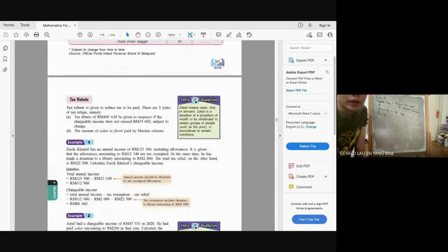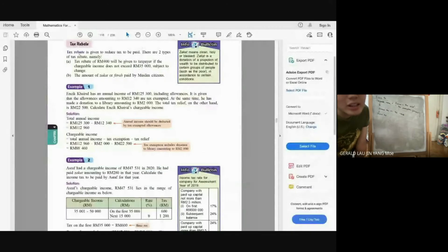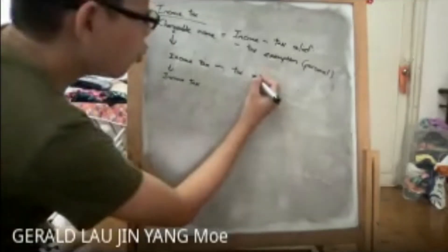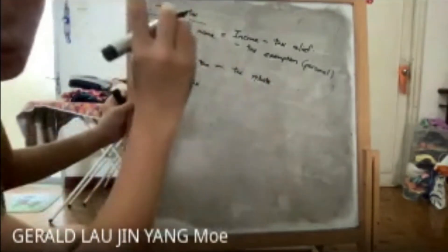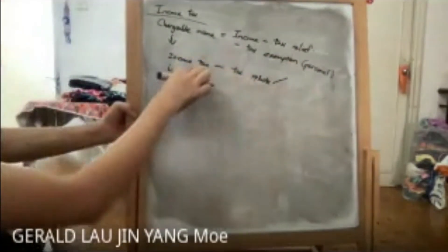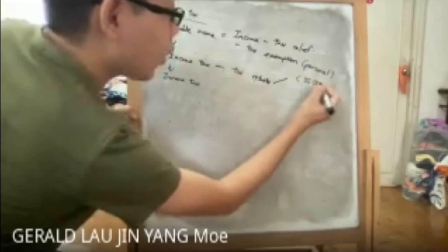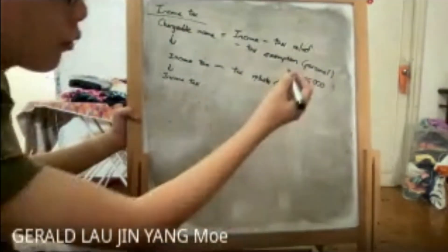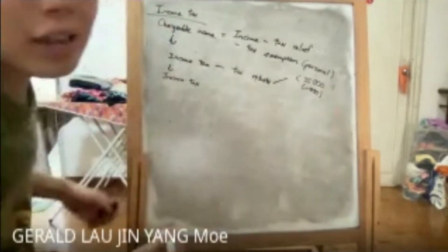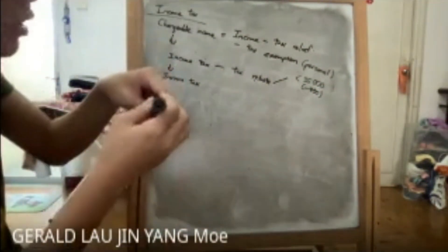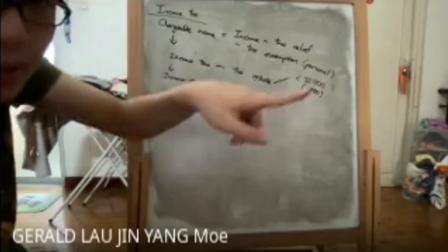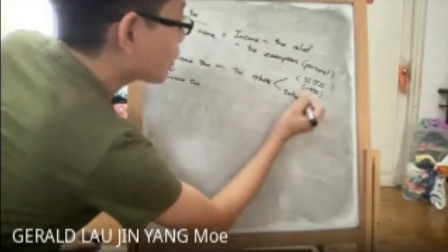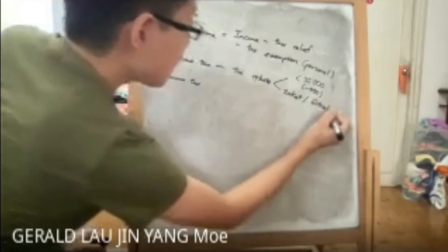Tax rebate is given to reduce tax to be paid. There are two types: First, if chargeable income is less than RM35,000, you get a tax rebate of RM400. Second, if you pay zakat or fitrah, the amount paid is a tax rebate. Both these rebates are subtracted from the calculated income tax amount, not from income.